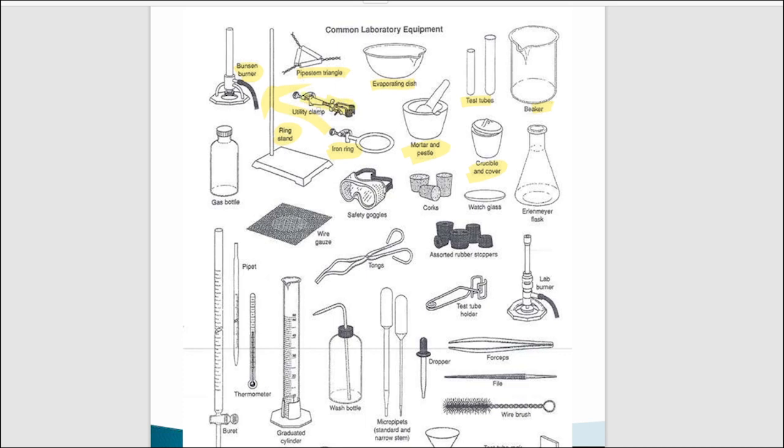This one is the clamp. Basically this clamp is used to hold the burette, so this one is the burette. To hold this burette, this clamp is used. Corks, watch glass, this one is the Erlenmeyer flask and Erlenmeyer flask.